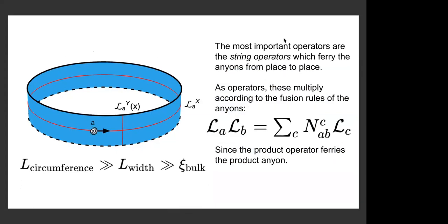In these systems, the most important operators are the string operators, which ferry our anyons from place to place. One can think about the string operator that goes around the system — it takes anyon A and brings it around, or more precisely, creates a pair of A and its antiparticle A-star, brings them around, and they annihilate on the other side. These string operators satisfy, as operators, multiplication according to the fusion rules of the anyons, because a product of two string operators on top of each other ferries a pair of anyons together, and a pair of anyons obeys the fusion rules.